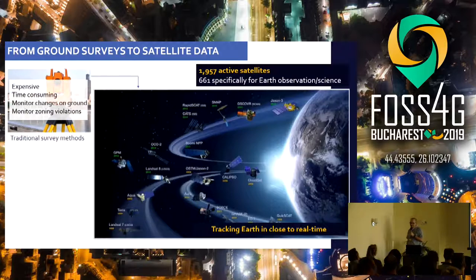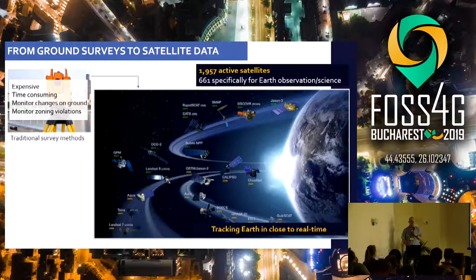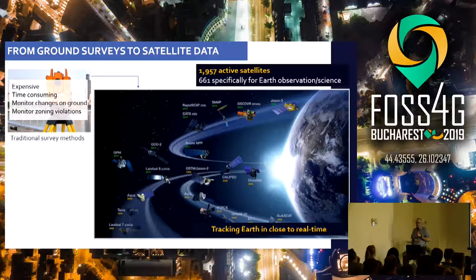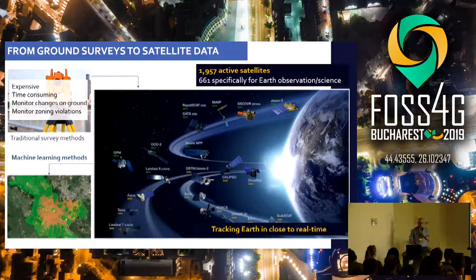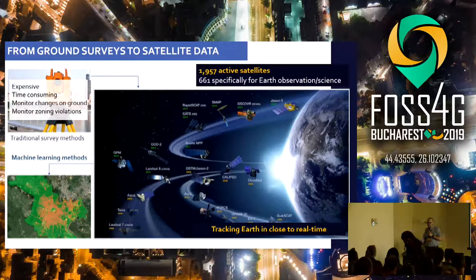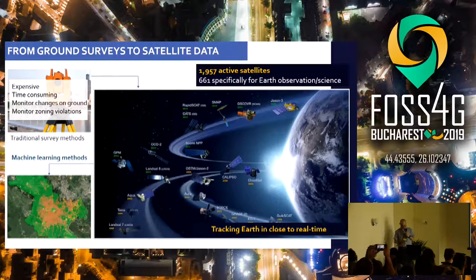On the other hand, there are currently close to 2,000 active satellites that constantly orbit Earth and collect data from every location on Earth and provide this data in close to real time. 600 of them are designed specifically for Earth observation applications. And when you apply machine learning algorithms, you can extract meaningful information from this data.